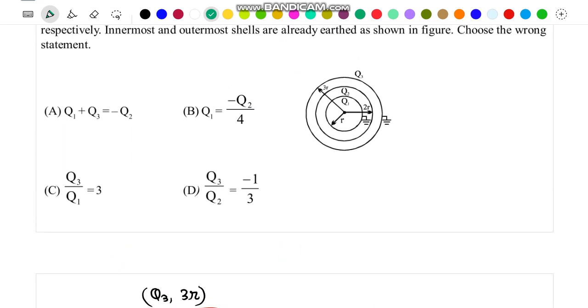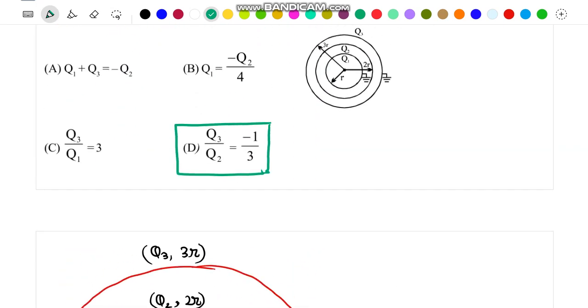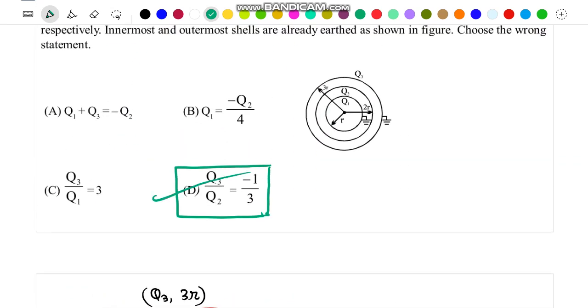Now we can check that expression D is our incorrect result, as this result should have been minus 3 by 4 instead of minus 1 by 3. This is the incorrect option.